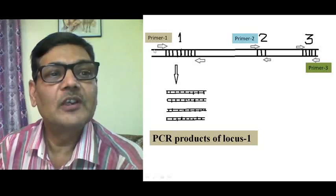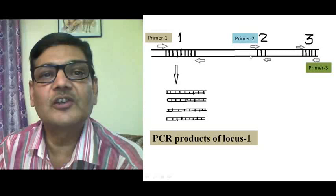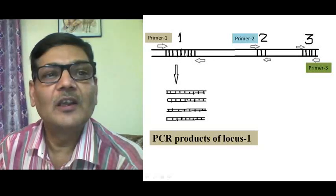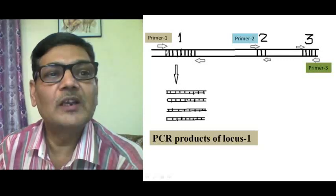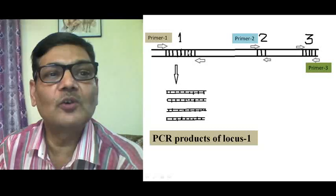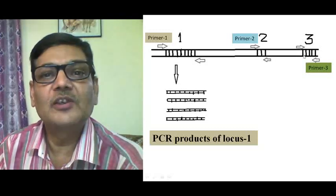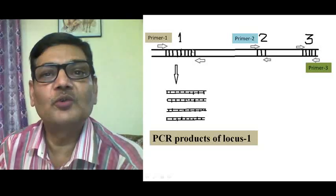See here in this diagram. Suppose this is a long stretch of DNA, and in this area of DNA there are 3 microsatellite portions which you can consider as loci: locus 1, locus 2, and locus 3. So in this area there are 3 microsatellite loci.